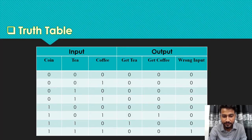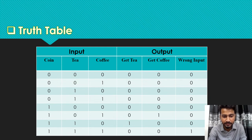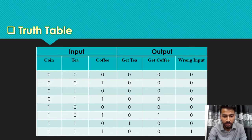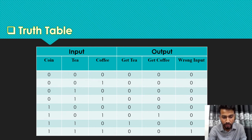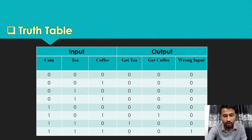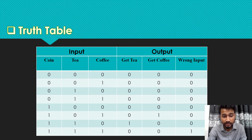Now I'm going to describe the truth table for the circuit of our vending machine. From this truth table we can see there are eight combinations for three inputs. When we insert a coin and press tea as input, we get tea as output from the vending machine. When we insert a coin and coffee as input, we get coffee as output. But when we select all inputs at a time, the output will show wrong press.